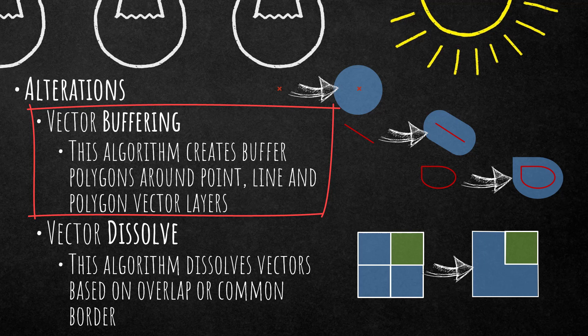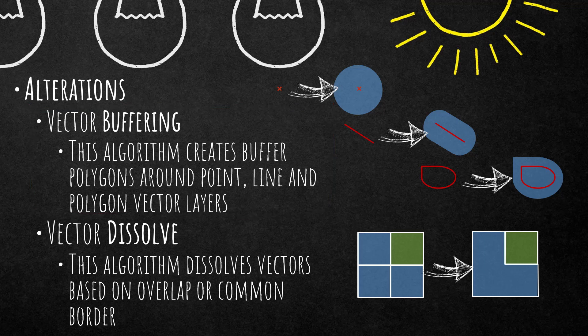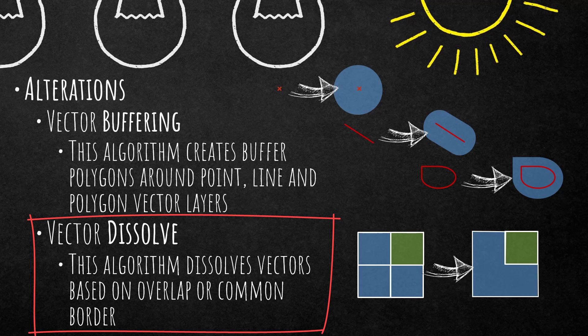We have an algorithm that creates buffers around points, lines, or polygons, so we can use all different types of vectors as input. We're also going to have a look at vector dissolve — we can dissolve a single vector or dissolve multiple vectors based on overlap or common border.